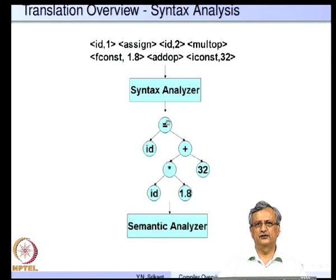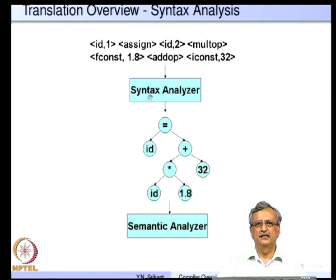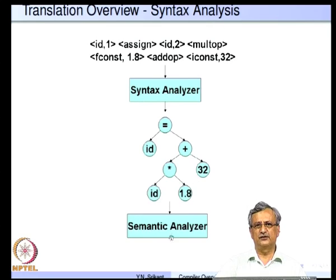For example, here is the structure of the assignment statement 'Fahrenheit = centigrade * 1.8 + 32'. The first 'id' corresponds to Fahrenheit, the second 'id' corresponds to centigrade, and then we have the assignment symbol, plus, star, 1.8, and 32 — everything is working out. This structure is shown in the form of a syntax tree, which is the input to the next phase called the semantic analyzer.